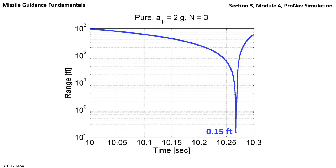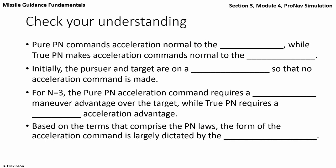Plotting range versus time, we get 0.15 feet miss, or about 2 inches. Before proceeding, check your understanding by reading these statements and inserting the correct word or phrase to complete them.